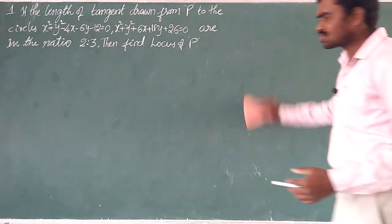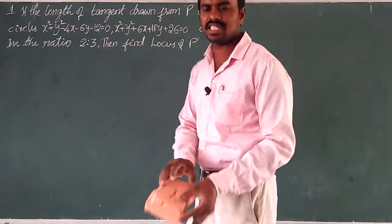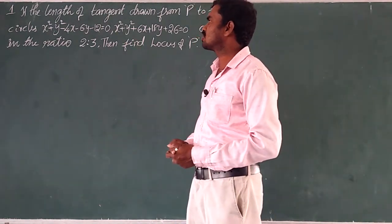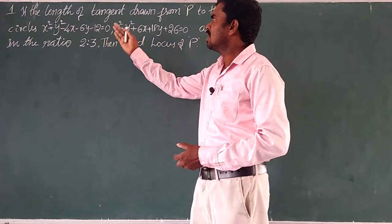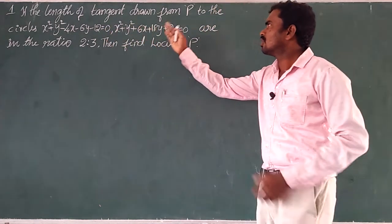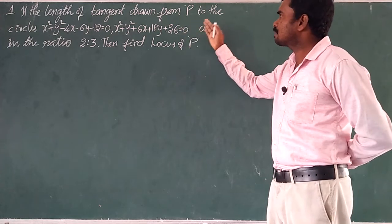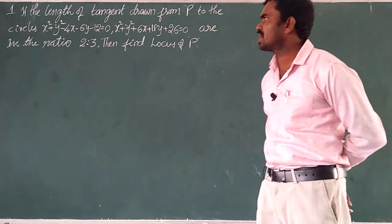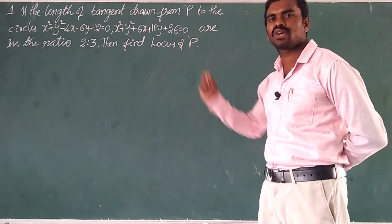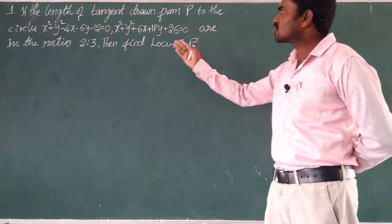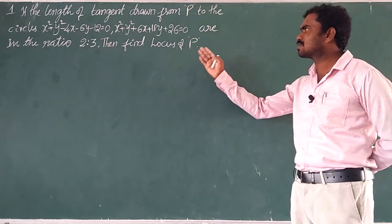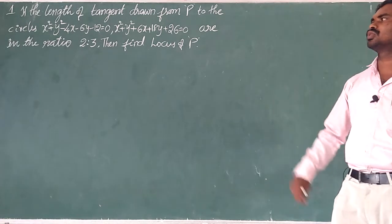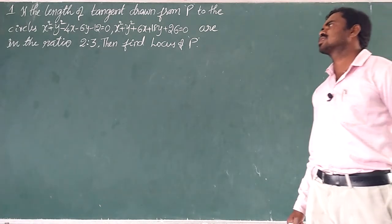This chapter actually consists of 22 marks for circles. Taking the 4-mark question: if the length of tangent drawn from point P to the circle x² + y² − 4x − 6y − 12 = 0 and to the circle x² + y² + 6x + 18y + 16 = 0 are in the ratio 2:3, then find the locus of P.